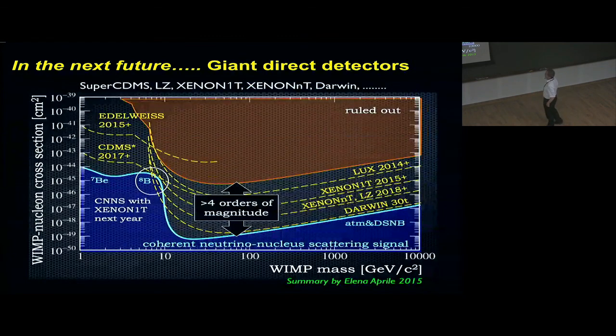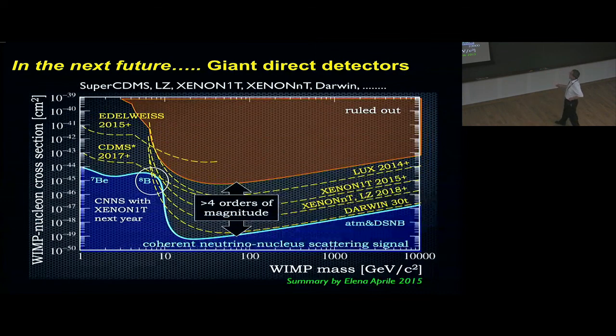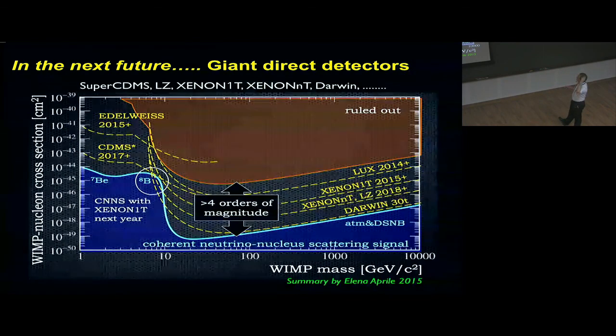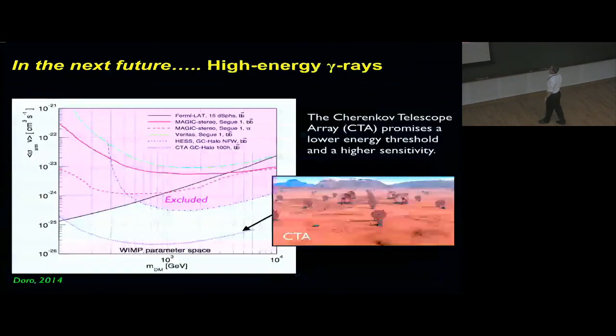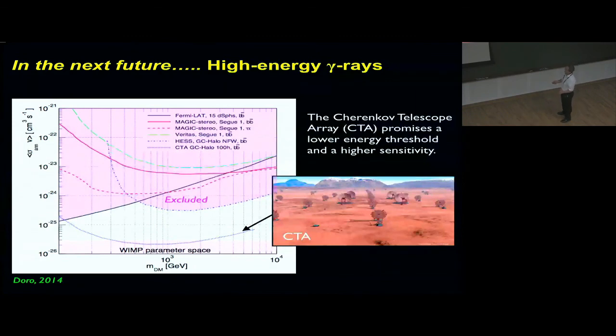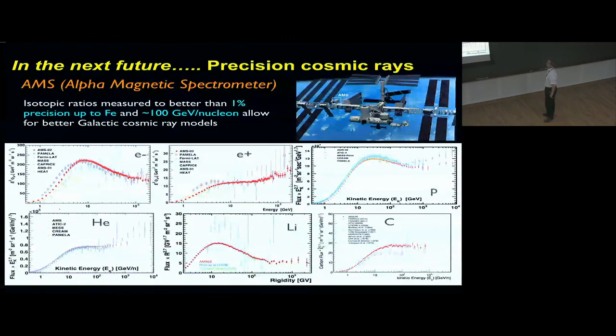We have bigger and bigger xenon detectors. We have just results from XENON1T. We'll have bigger XENONnT. We have LZ, DARWIN, and so on, and we'll reach down to all the possibilities. In gamma rays, CTA, the Cherenkov Telescope Array, promises a lower energy threshold, higher sensitivity. Compared to the current excluded region in pink, it will go down by about an order of magnitude. And finally, AMS has been producing exquisite data on cosmic rays, and the precision of this data is so high, it is the theory that is lagging behind.